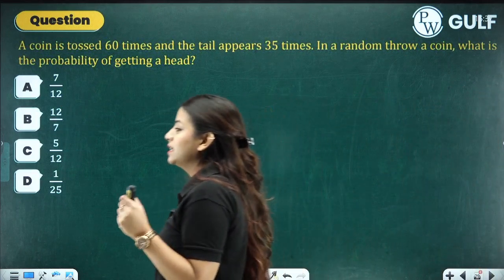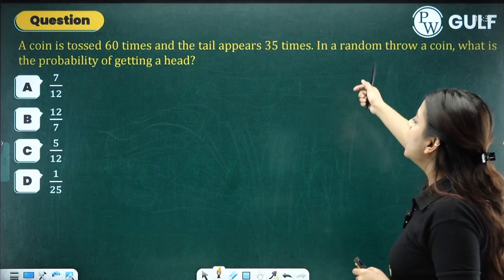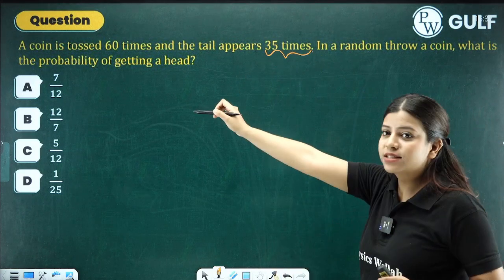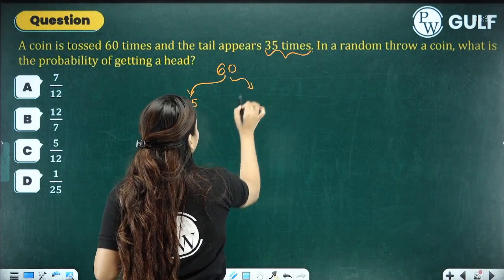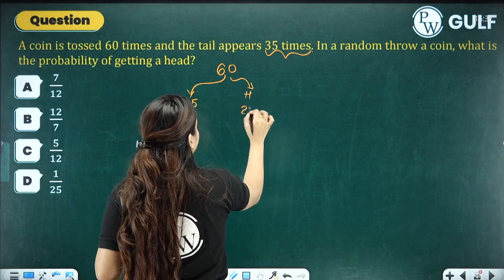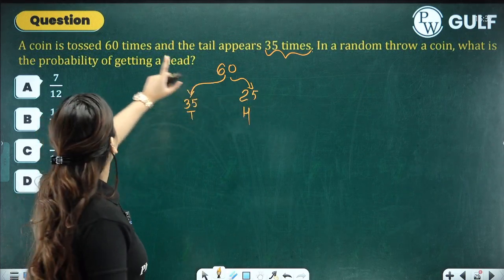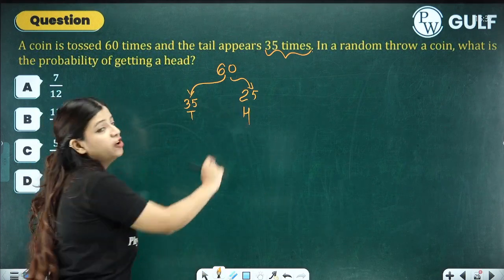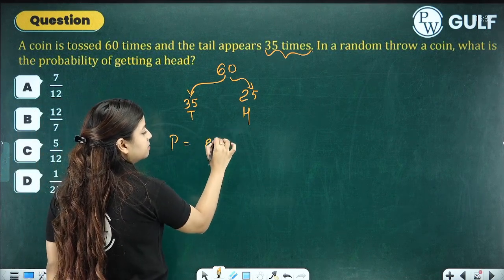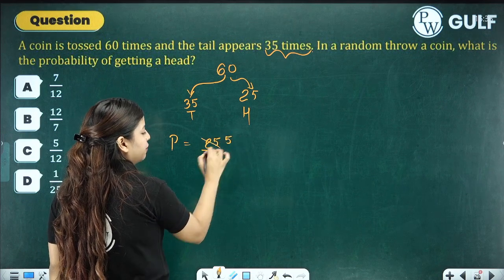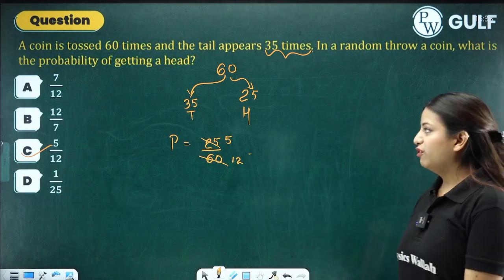A coin is tossed 60 times; the tail appears 35 times. So the head appears 60 − 35 = 25 times. In a random throw of the coin, what is the probability of getting a head? Favourable = 25, total = 60. Probability = 25/60 = 5/12. Option C is the correct answer.